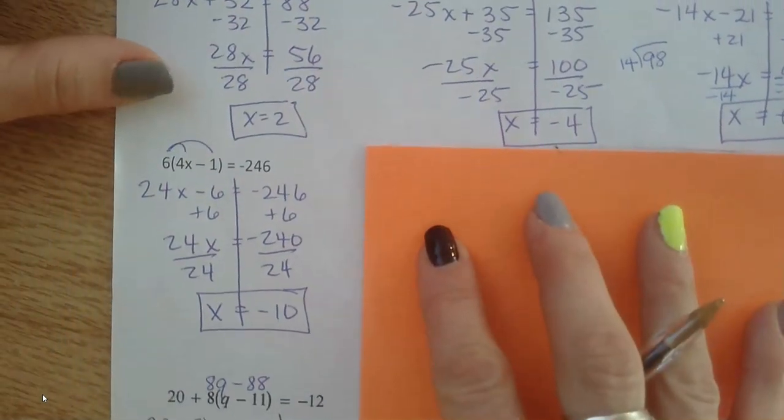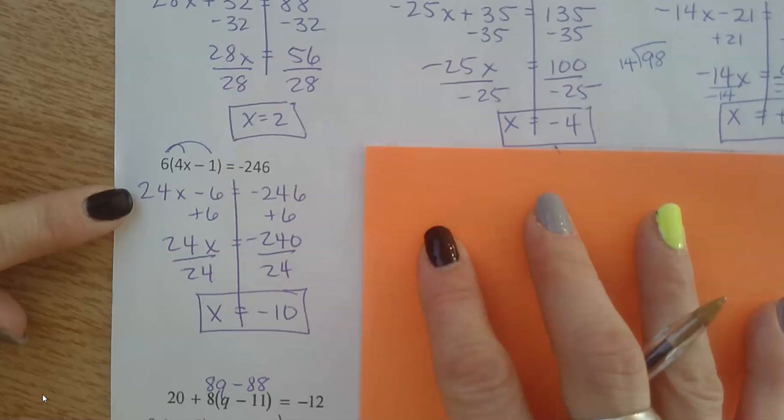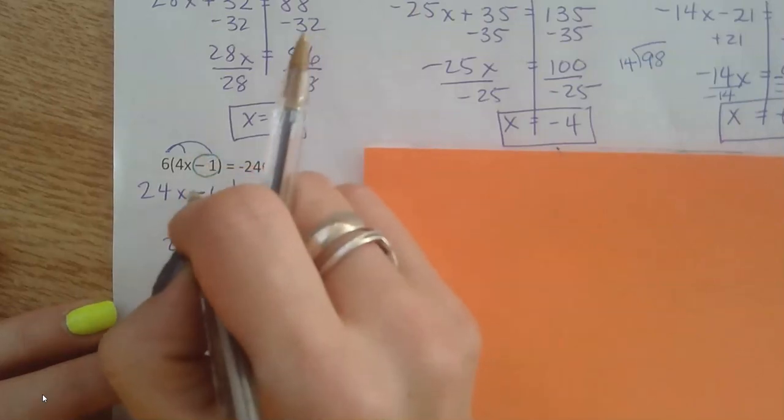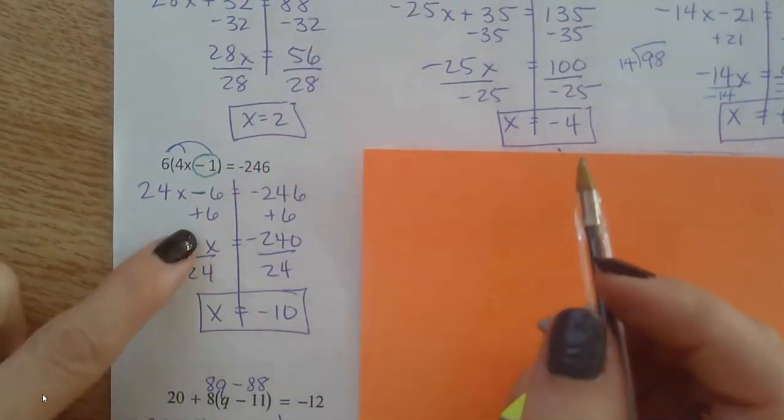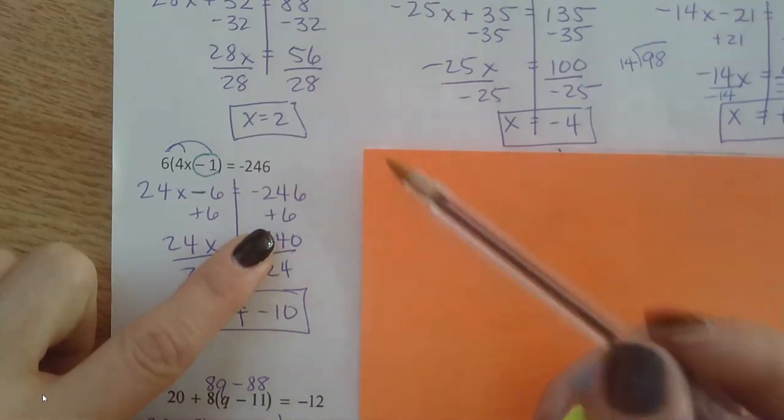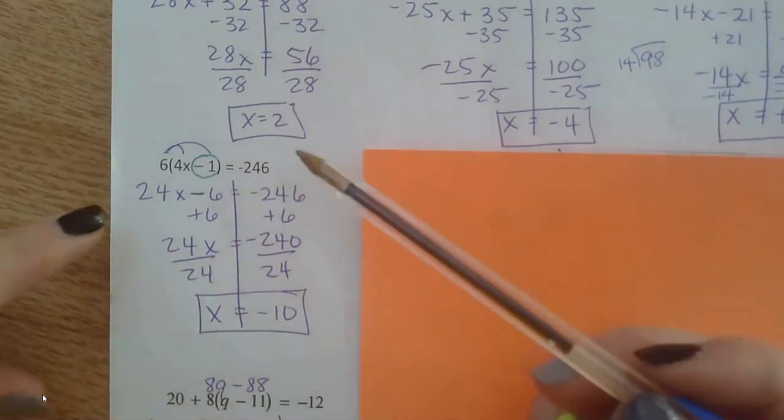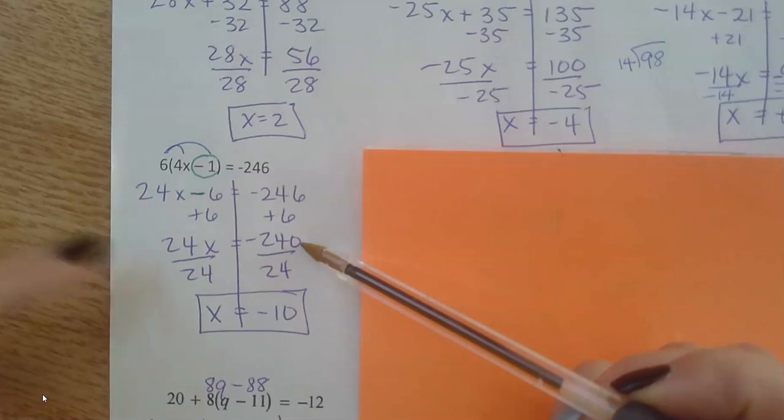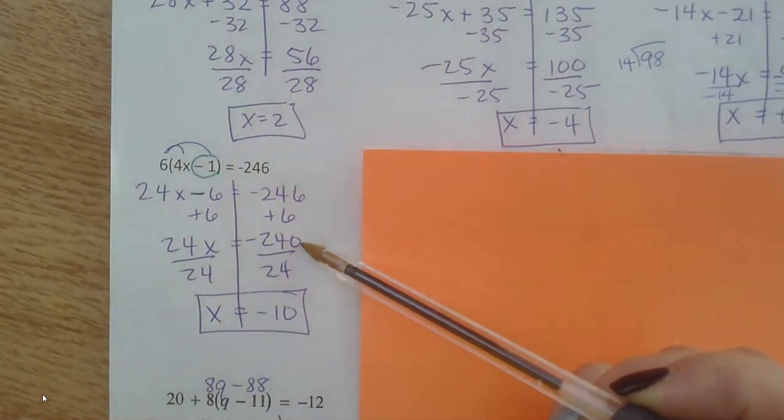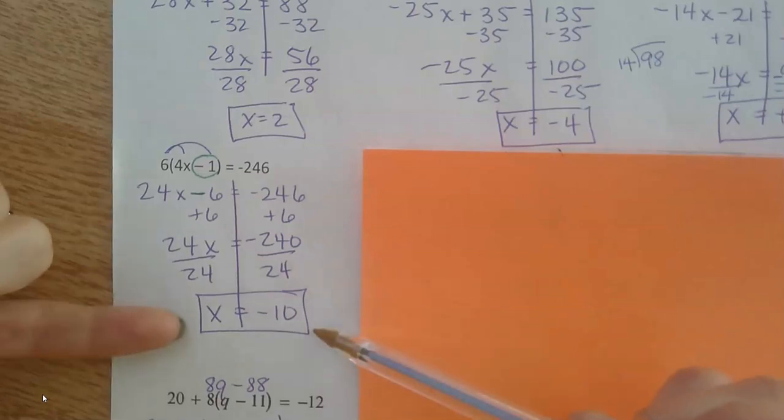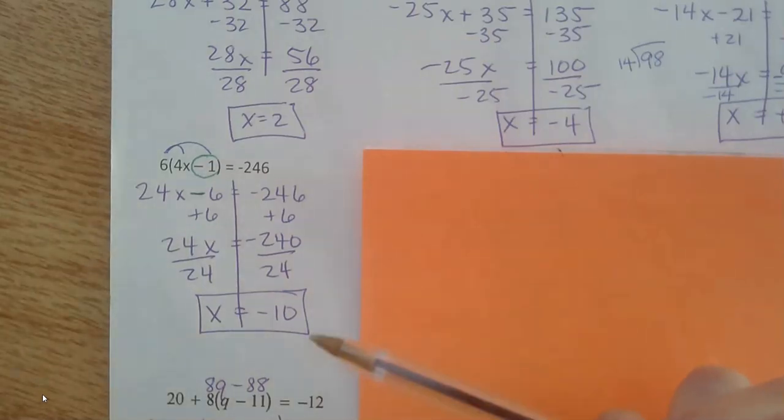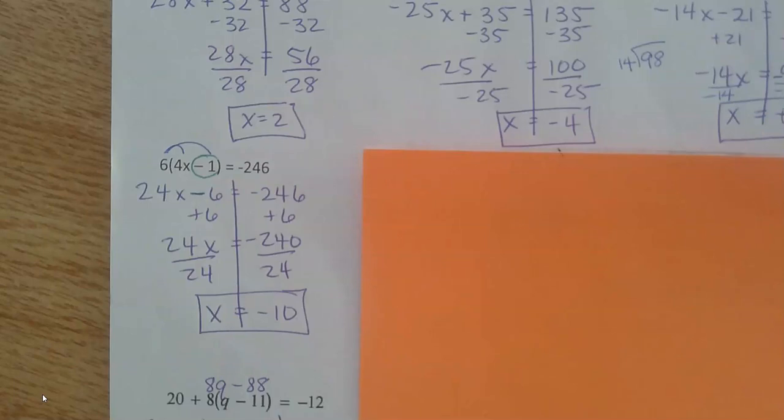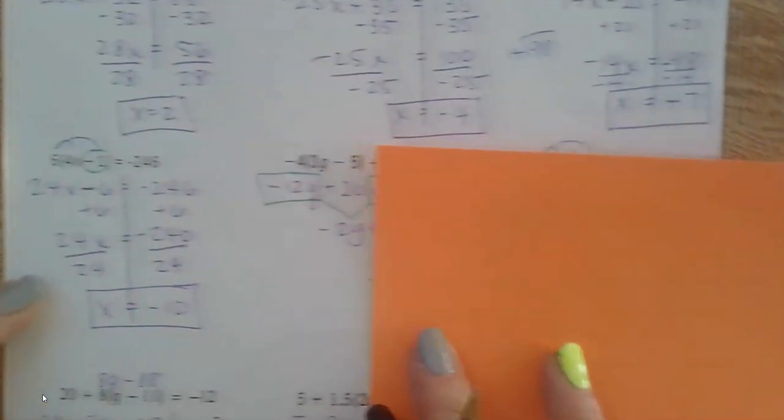Okay. Next one down here. I distributed the 6. So I got 24x. And remember, this is a negative 1. So that gave me negative 6. So the inverse of negative 6 is plus 6. Fix this as you're checking if you need to. Bring everything down. Here my signs were different. So different signs subtract. But I still have a negative. And then my final step was to divide by 24 on both sides. And I got negative 10. Remember, it is your job to put this negative 10 back in for x and check to make sure it works. Especially on a quiz or test.